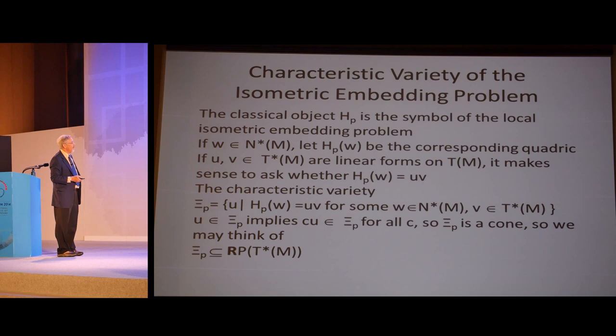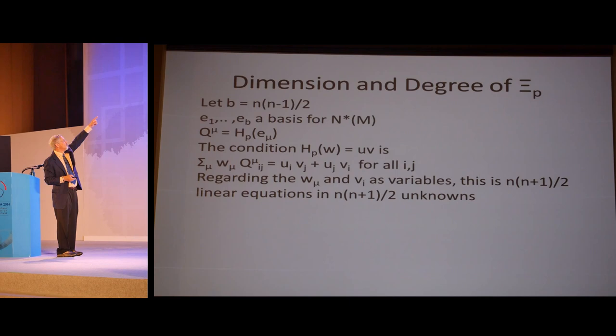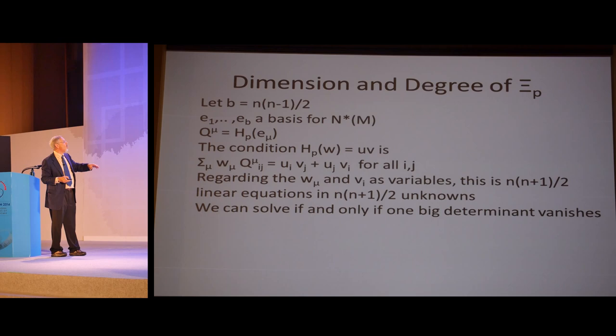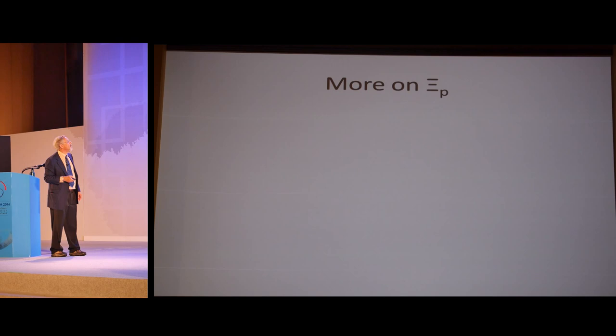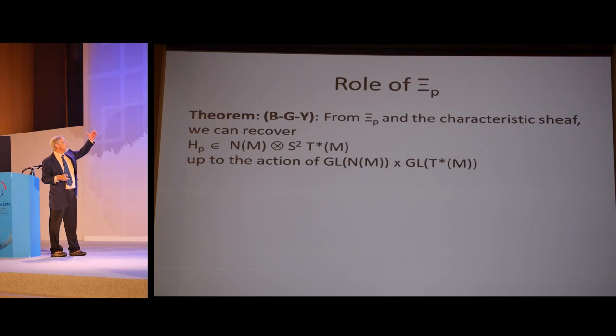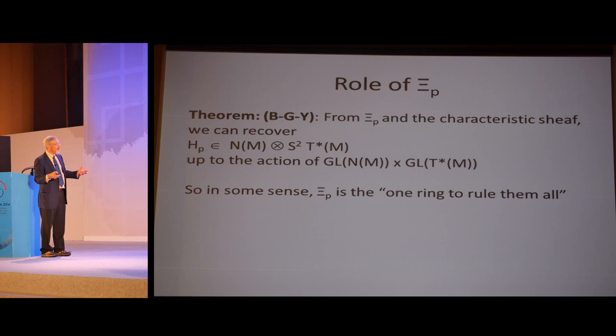The classical object, the second fundamental form, turns out to be the symbol for the local isometric embedding problem. That was a great insight. Then you can say what the characteristic variety is. It's the set of all U's such that for some, one of these quadrics, that quadric factors into U times something else. We have a collection of quadrics coming from the second fundamental form, and at least one of these has U as a factor. That gives you the characteristic variety. This is a cone then in projectivized tangent space. The last crucial thing is, if you look at all the possible ways you can solve this, the condition for U to be a factor is that equation I wrote, this system of linear equations, summation W_μ, et cetera. The W's and the V's are variables, the Q's are known, and the U's are what you want to solve for. You'll find it's exactly the same number of equations as unknowns. There's one big determinant that vanishes, and you can see when you look at that determinant, the U's appear in n of the columns, and so it has codimension 1 and degree n.